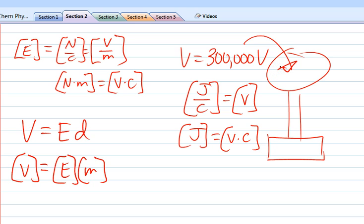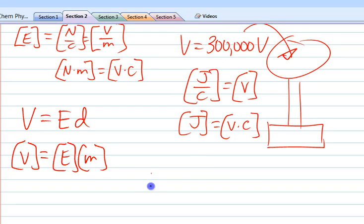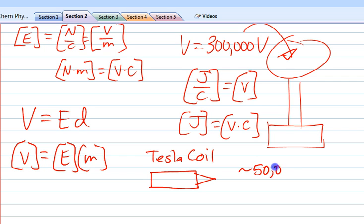So anyways, back to the Van de Graaff. It's 300,000 volts, but I have no problem whatsoever touching it. Whereas the Tesla coil is only about 50,000 volts, but I wouldn't want to touch that. So why is that? What's going on?